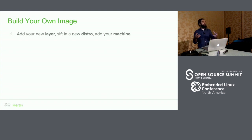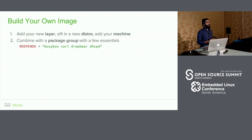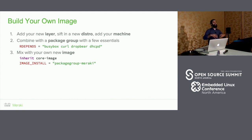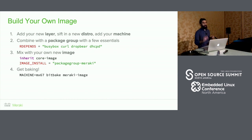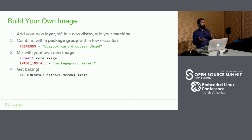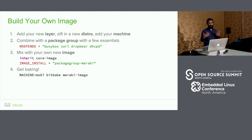We went back to the guides — which are pretty helpful — and decided the first thing we needed to do was add a new layer, a new distro, and a new machine mapping to the new product's hardware. We then created a very minimal package group — a collection of packages to get us to the internet — and created a new image that installs this group. This again took about 10 minutes and we had something booting on real hardware, all within a few days of work.